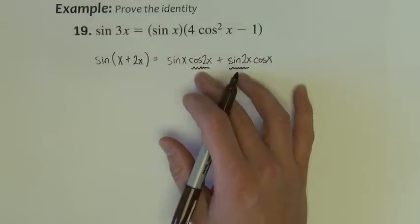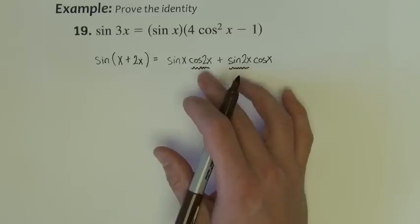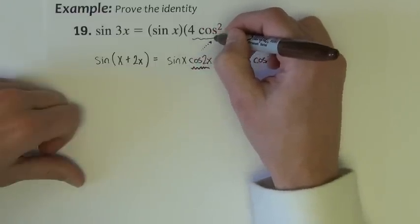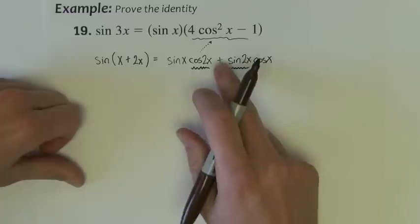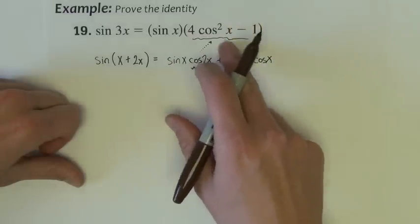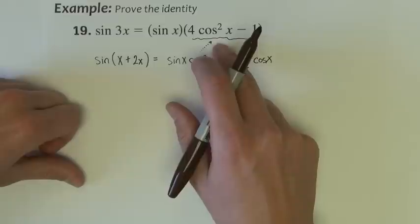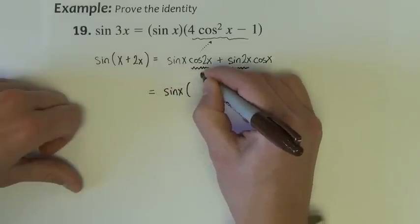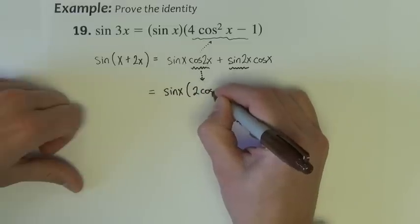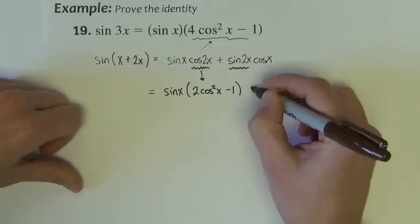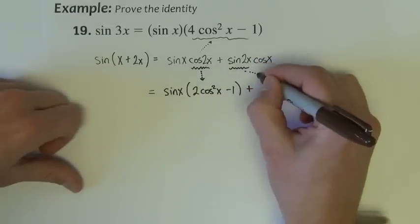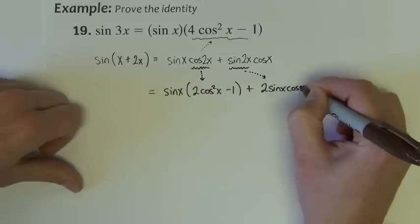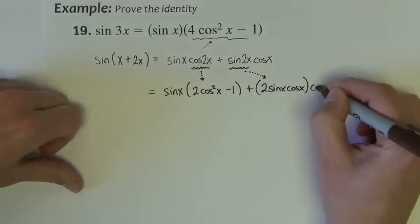If you recall, the cosine 2x, there are three different options for cosine 2x. There's one that kind of looks like that, so that's the one I'm going to use for cosine 2x, is the one that kind of looks similar to this one. So we've got sine x times cosine 2x is 2 cosine squared x minus 1, plus sine 2x is 2 sine x cosine x, that's times cosine x.